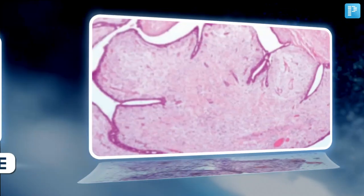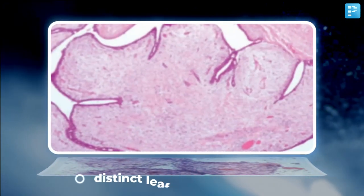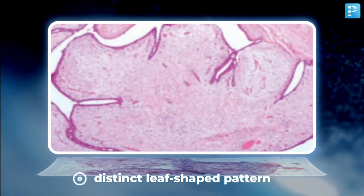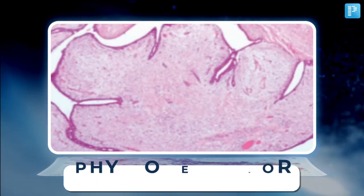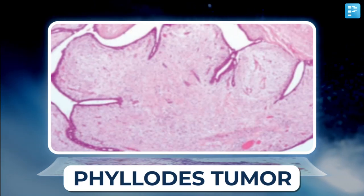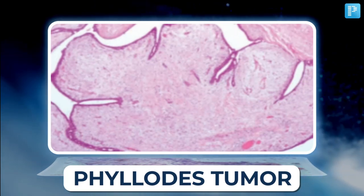Image number 4 presents a distinct leaf-shaped pattern. What condition does this pattern suggest? That's a phyllodes tumor. Impressive if you identified that.